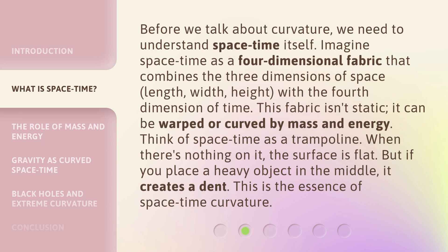Before we talk about curvature, we need to understand space-time itself. Imagine space-time as a four-dimensional fabric that combines the three dimensions of space — length, width, height — with the fourth dimension of time. This fabric isn't static; it can be warped or curved by mass and energy. Think of space-time as a trampoline. When there's nothing on it, the surface is flat. But if you place a heavy object in the middle, it creates a dent. This is the essence of space-time curvature.